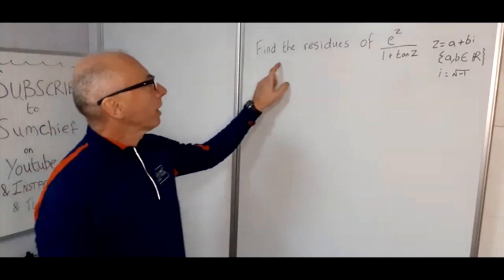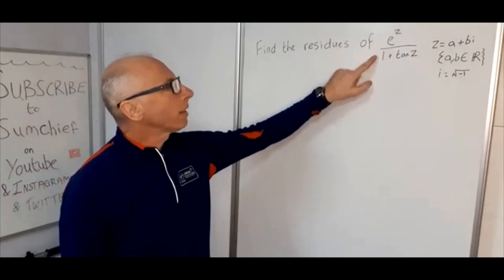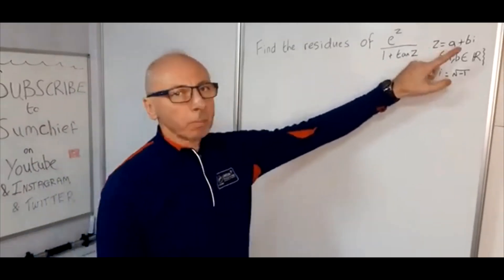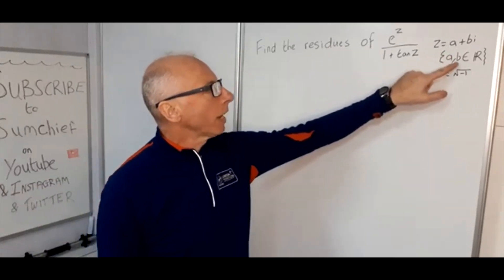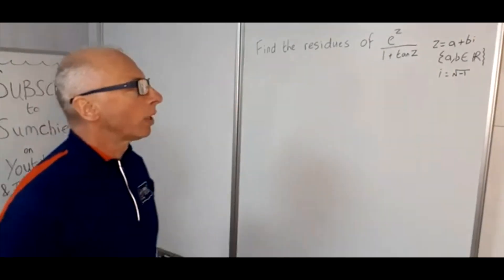Okay, so we're going to do some complex analysis and in particular we're going to find the residues of this function here: e^z over 1 plus tan(z), where z is a plus bi, a complex number. Normally a and b are in the real numbers and i is the square root of minus 1.